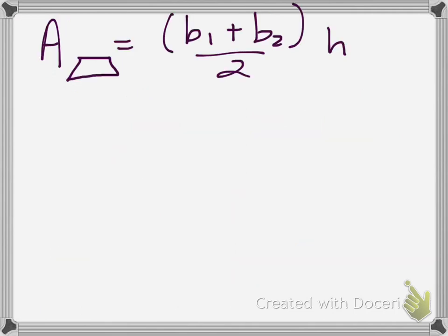There's two different formulas that we can use to find the area of a trapezoid. Here's one that you've been working with and this one says the area of a trapezoid is equal to base 1 plus base 2 divided by 2 times the height.